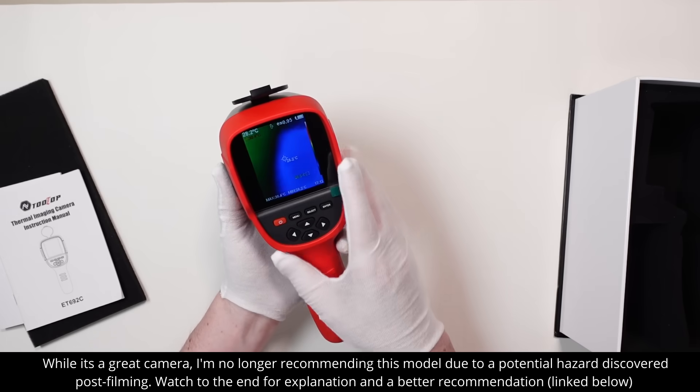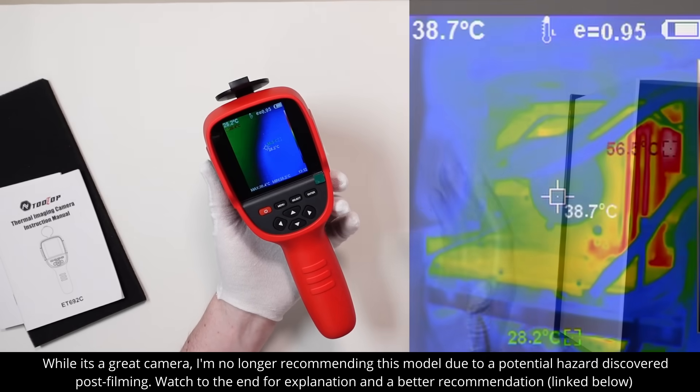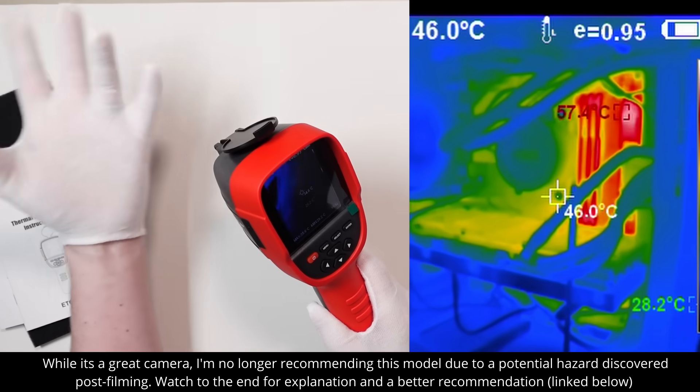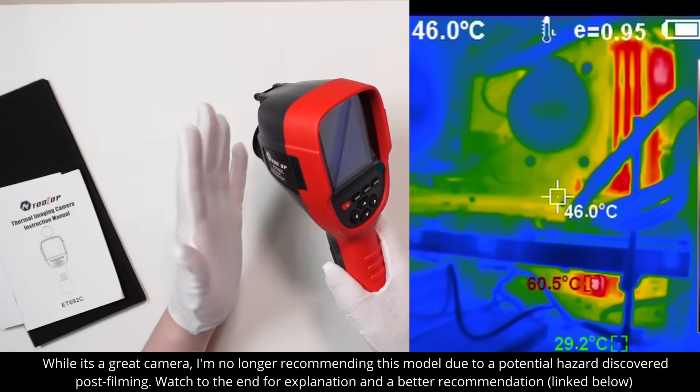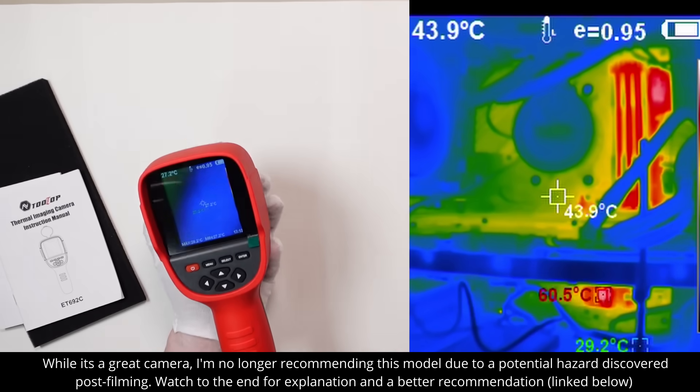Let's take a look at some items around my house. First of all, my computer. I was surprised to see on my computer the CPU and GPU were not the hottest item. It was actually the RAM, which makes sense since they don't have any fan cooling on them.